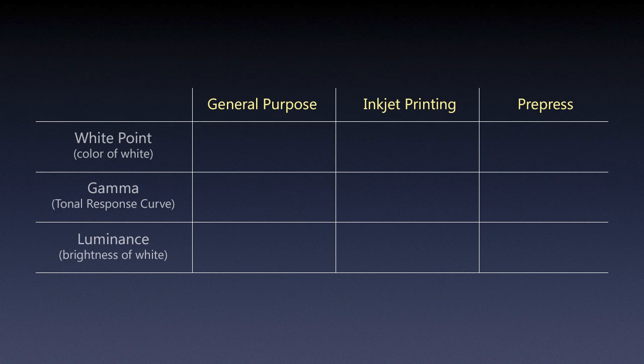Inkjet printing is when you're trying to match the print to what you see on screen and you're doing your own printing at home — that's something you'll have to massage the settings for, and I can't give you exact settings because you have to match for yourself. Pre-press is the classical situation when you're retouching or preparing work to be printed in a magazine, for example.